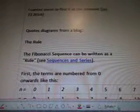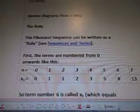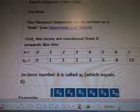So, quotes and diagrams from a blog. The rule. The Fibonacci sequence can be written as a rule. See sequences and series. First, the terms are numbers from 0 onwards like this. N equals 0, 1, 2, 3, 4, 5, 6, 7, 8, 9, 10. It goes up to 14.